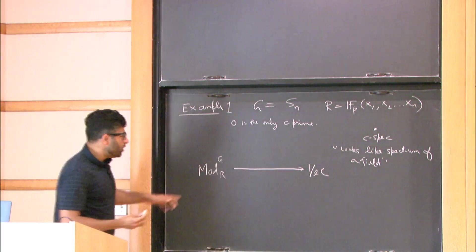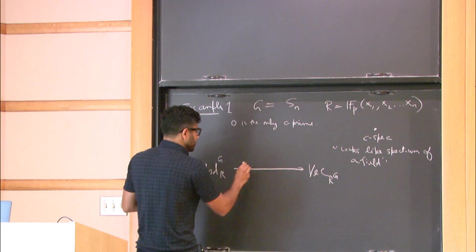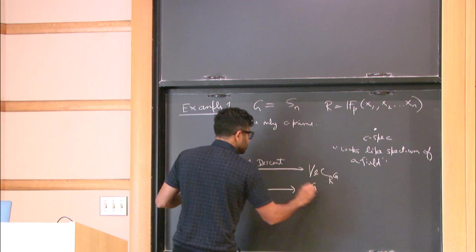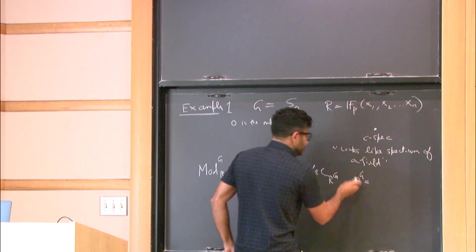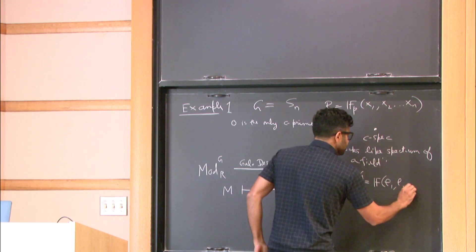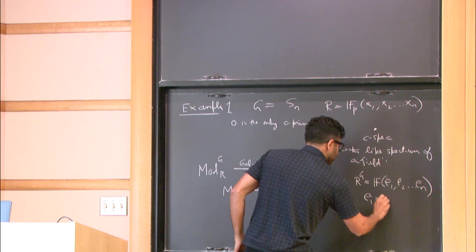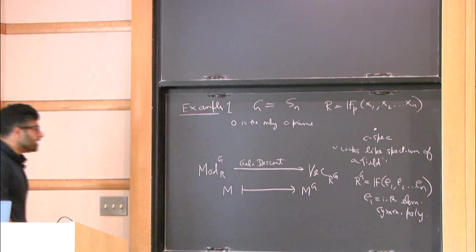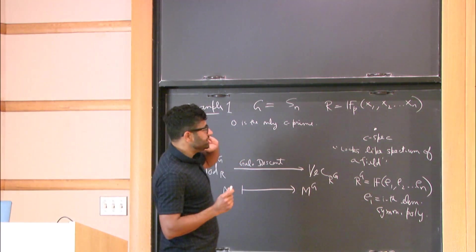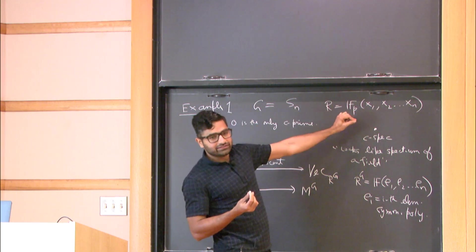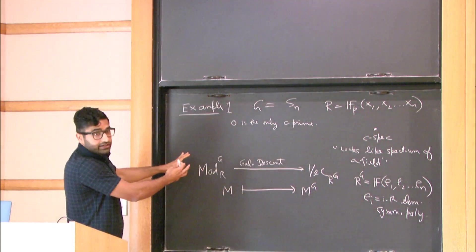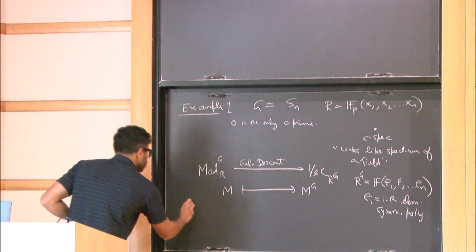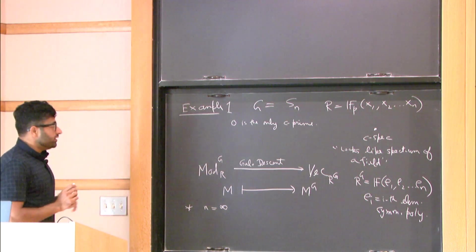is the same as vectors over the fixed field, and this is called Galois descent, where you take a module M and take its G invariants. So, in this case, the fixed field in this case is just the field over the elementary symmetric polynomials. Right. So this example is showing you that this C prime or C spectrum is a good thing to study. There's only just one point in the C spectrum, and the category of R modules also behaves like just vectors over a field. Right.